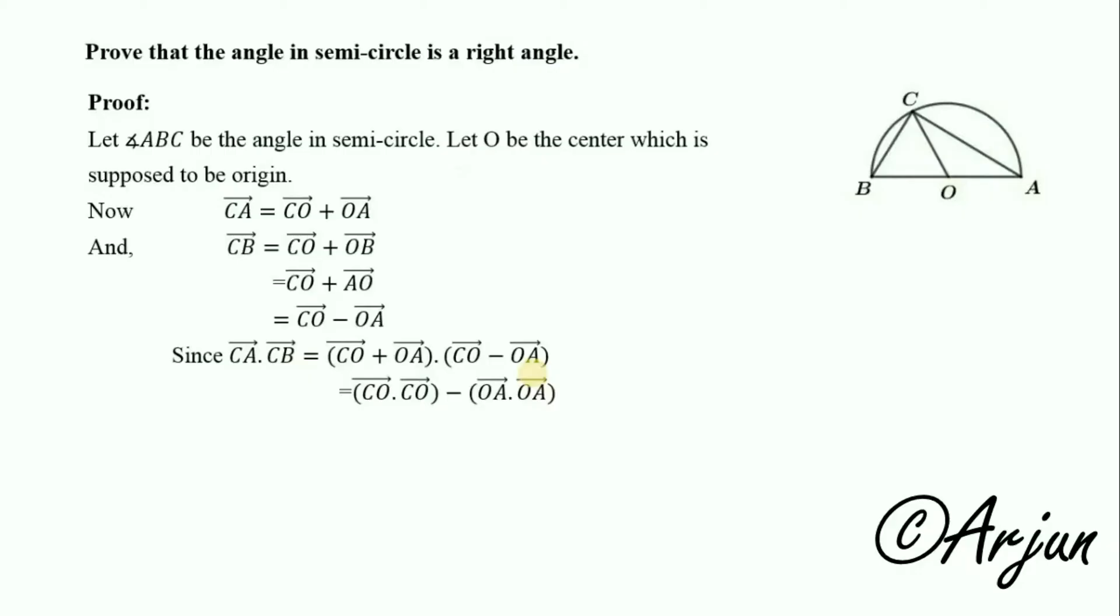Since CA dot CB equals (CO plus OA) dot (CO minus OA), this equals CO dot CO minus OA dot OA, which is CO squared minus OA squared.